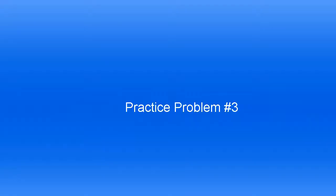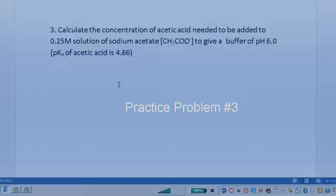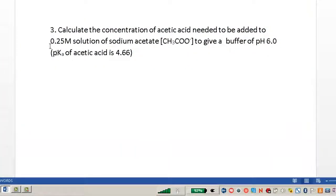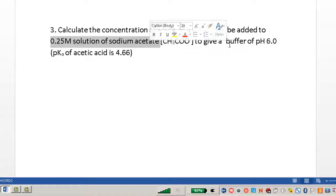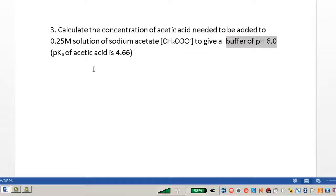Final practice problem, you're asked to straight up use the Henderson-Hasselbalch equation for acetic acid. You have 0.2 molar of sodium acetate. We know that we want to make a buffer that's pH 6. We're given the pKa of acetic acid is 4.66.